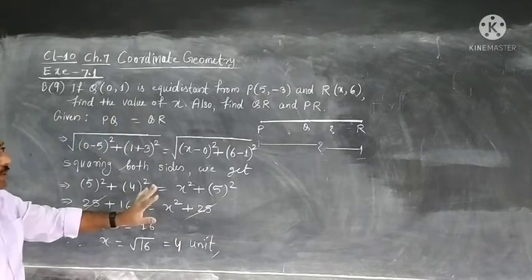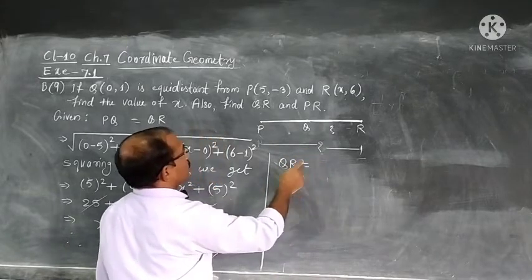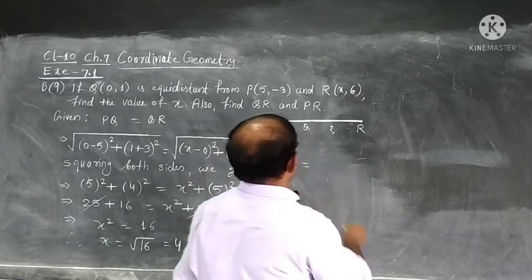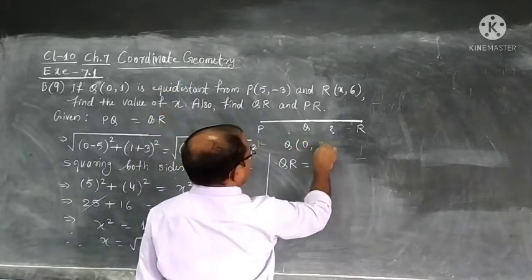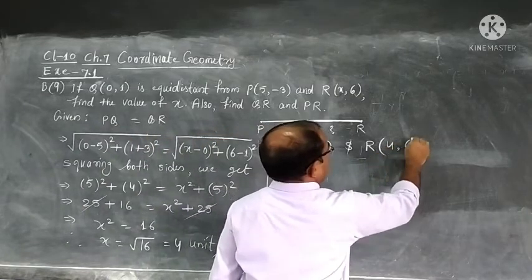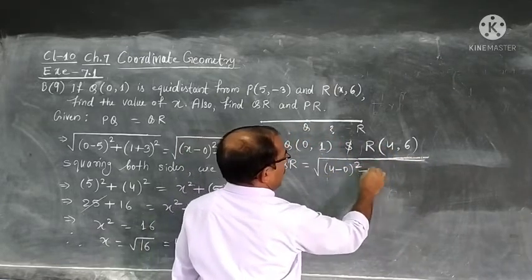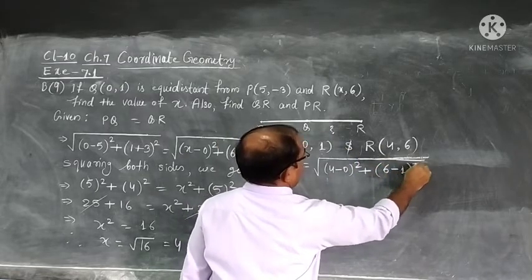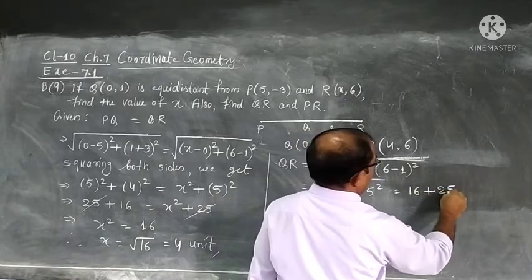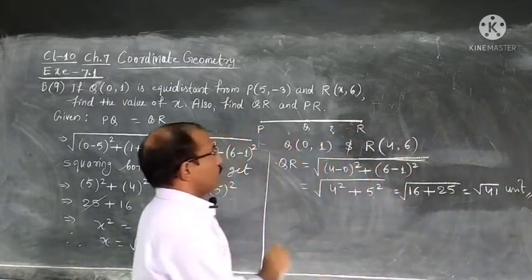Question was there find x we found. Now, find QR. We will get QR. QR will be equal to what we will look at this point QR. We will write first because it was here x to find we found. We will write QR the point Q is (0,1) and R is now (4,6), x is 4 and 6. Then we will calculate what will be x2 minus x1 that will be (4-0)² plus (6-1)² whole square. 4² plus here we will get 5², 4² will be 16, 5² will be 25 we will get root 41. This will be root 41 will be distance between Q and R.